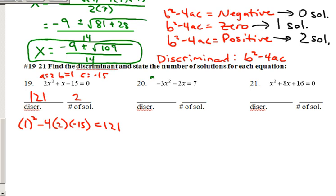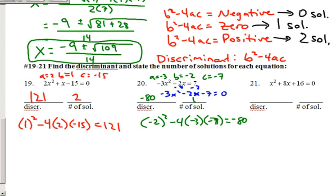The next one, a equals negative 3, b equals negative 2. But we got a problem here. That 7, it's on the wrong side. So these have to be equal to zero. So what I'm going to do is minus 7 to both sides, get negative 3x squared minus 2x minus 7 equals zero. You see that this now changes my c. If you were to put positive 7, you would have got the wrong answer. So now I have negative 2 squared minus 4 times negative 3 times negative 7. Go ahead and put this in the calculator. Negative 2 squared minus 4 times negative 3 times negative 7. You get negative 80. Well you get negative 80. That means we have zero solutions.